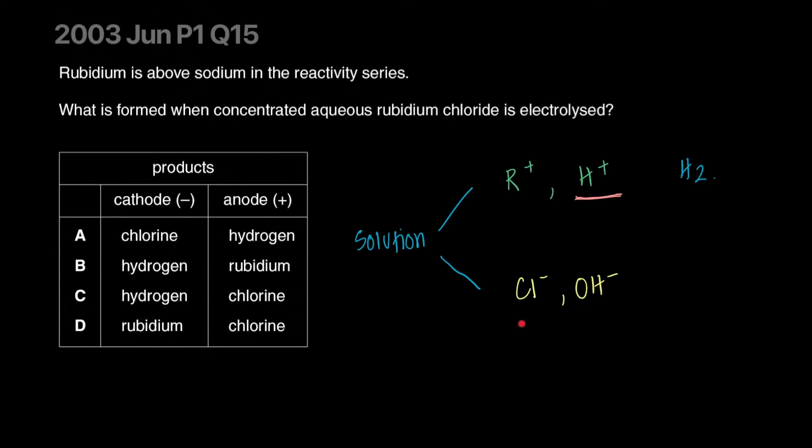On the second side, you have your negative ions. Normally hydroxide ion will discharge because it's way bottom, but there's a caveat. If the solution is concentrated, the negative ion in higher concentration will discharge. Because rubidium chloride is in higher concentration, chloride ions are in higher concentration. So the one that'll discharge is actually chlorine. At the anode, chlorine will be produced.